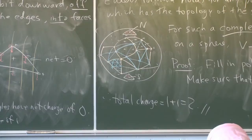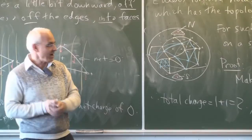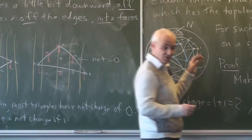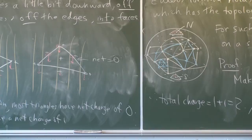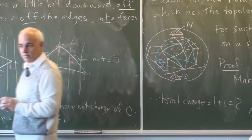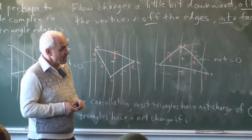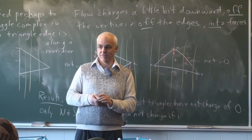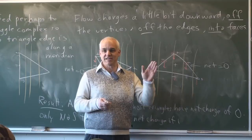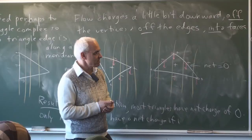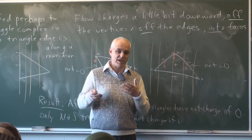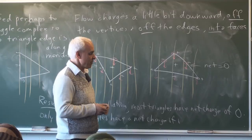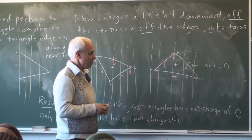This proof implicitly uses ideas that will be important later: the idea of flowing, of a vector field, of sinks and sources. We'll eventually extend this argument to deal with surfaces other than the sphere. Next time, we'll look at another approach to Euler's formula relating to graphs — in fact, probably the simplest possible proof — which connects to planar graph theory.